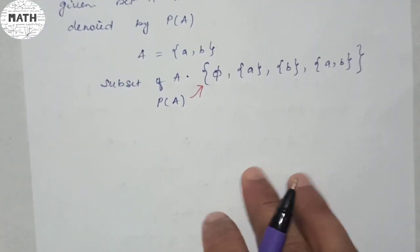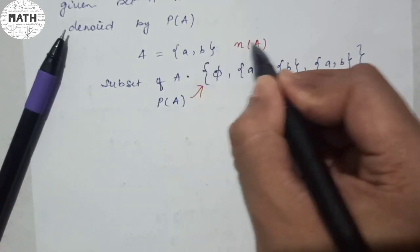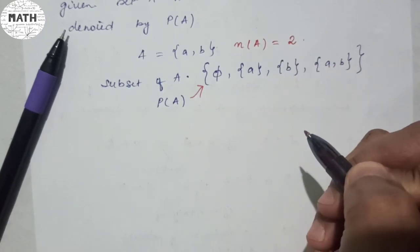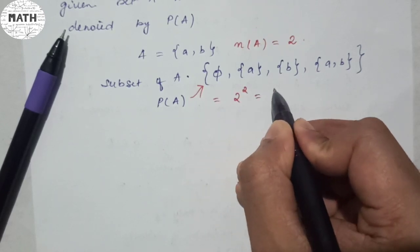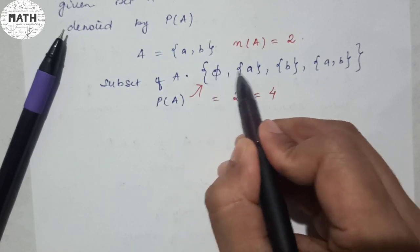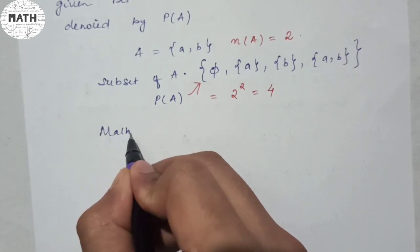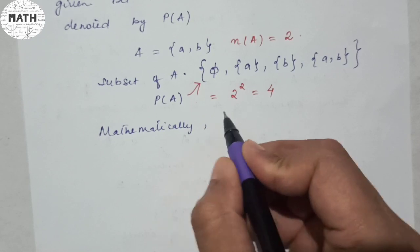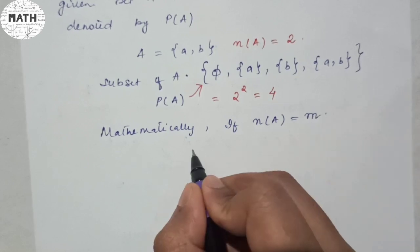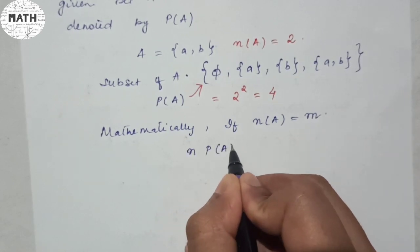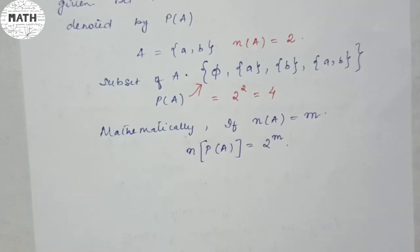We can prove this mathematically. The number of elements of A is 2. So the power set of A has 2 to the power 2, which is 4 elements. Counting the subsets of A: 1, 2, 3, 4 — indeed 4. So mathematically, if the number of elements is M, then the number of elements of the power set is 2 to the power M. That's all about your power set.